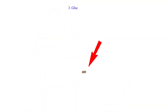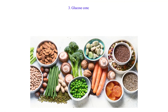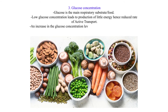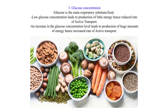3. Glucose Concentration. Glucose is the main respiratory substrate. Low glucose concentration leads to production of little energy, hence a reduced rate of active transport. An increase in glucose concentration leads to production of large amounts of energy, hence an increased rate of active transport.